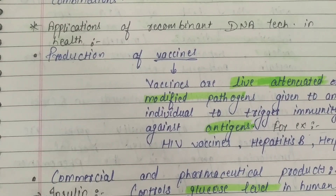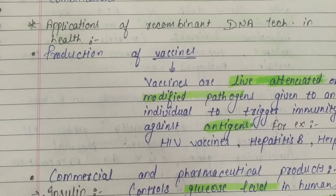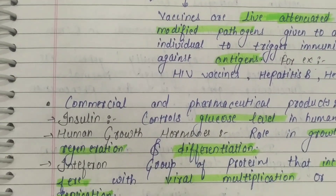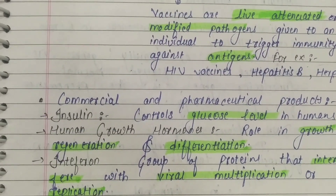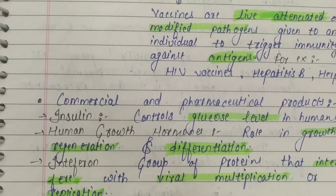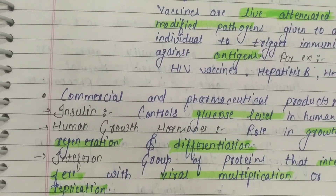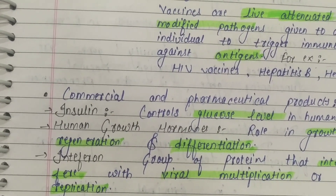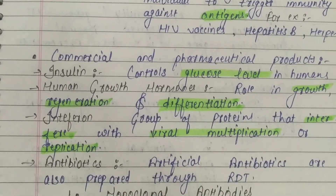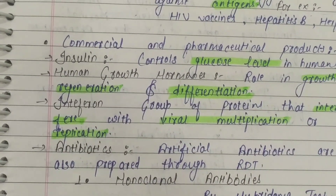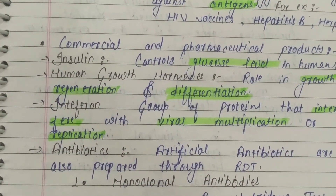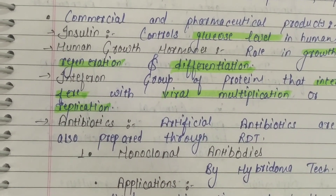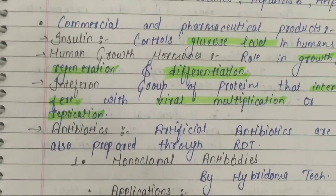Examples include HIV vaccines, hepatitis B, and herpes vaccines. Commercial products like insulin and human growth hormone, which help in growth, regeneration, and differentiation of different cells, are also produced. Additionally, interferon — which inhibits viral multiplication and replication — and artificial antibiotics are produced using recombinant DNA technology.